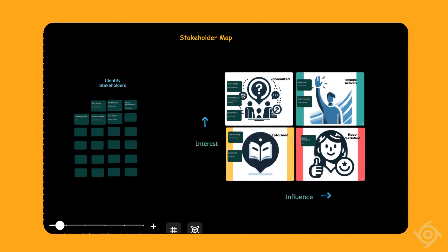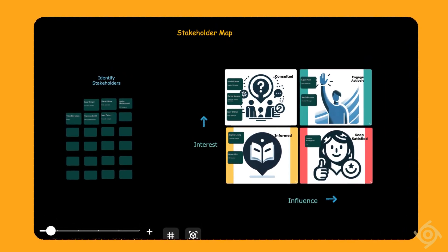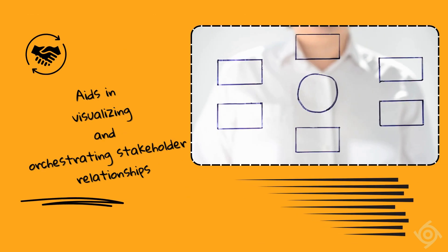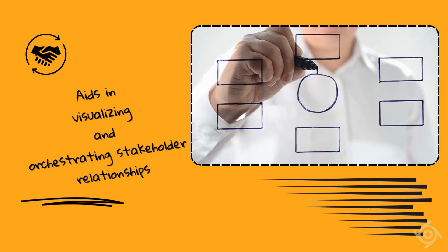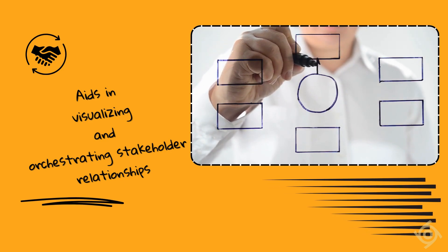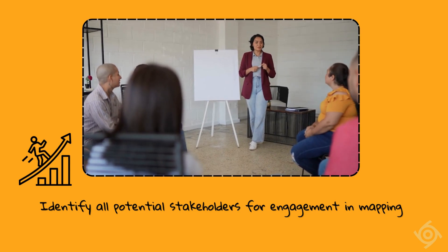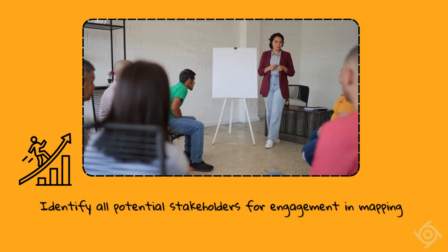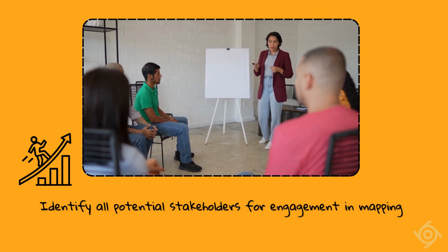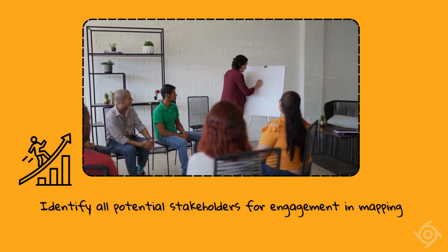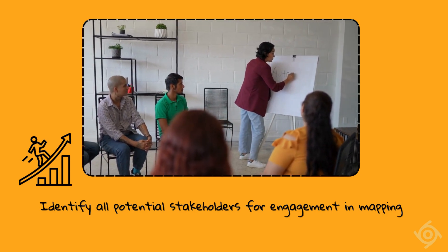Introducing the UnPlex.me Stakeholder Map Template, a powerful AI-integrated template that helps you visualize and manage your stakeholder relationships. The first step in any stakeholder mapping exercise is to first identify all potential stakeholders that you should engage with.